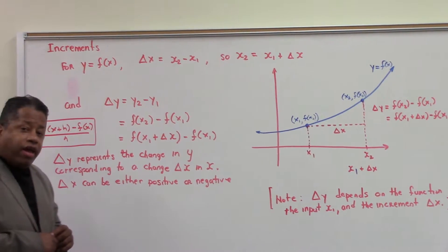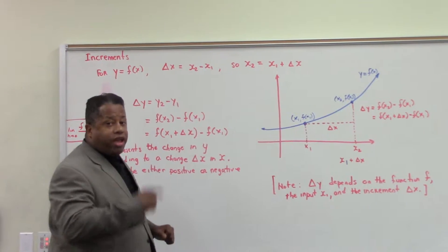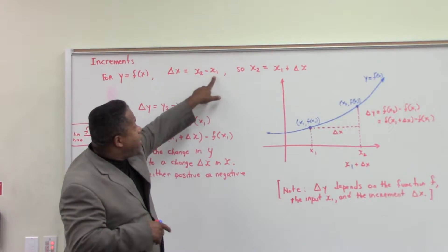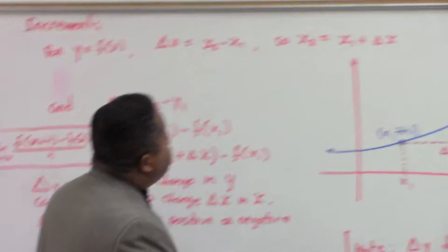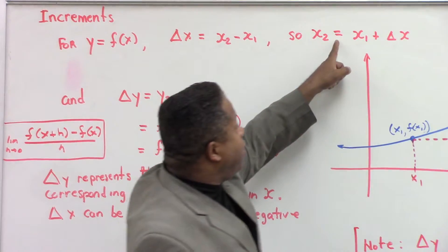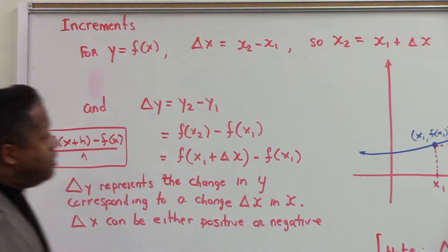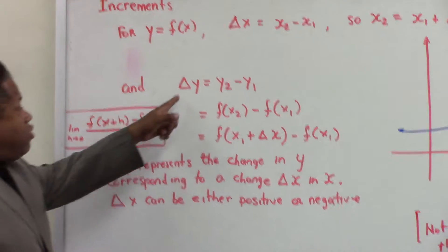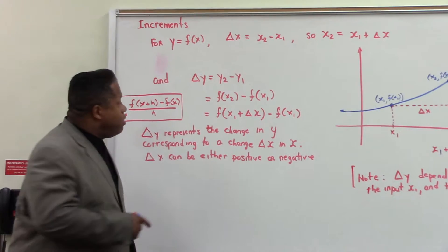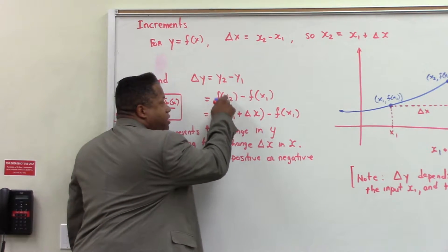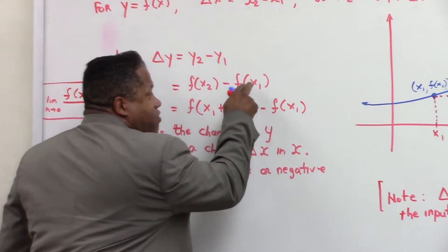For y is equal to f of x, some function, delta x is the change of x, where x₂ minus x₁ is a representation of that, so that if we solve for x₂, we get that x₂ is equal to x₁ plus delta x. And delta y is equal to y₂ minus y₁, which is like the function f of x₂ minus f of x₁.